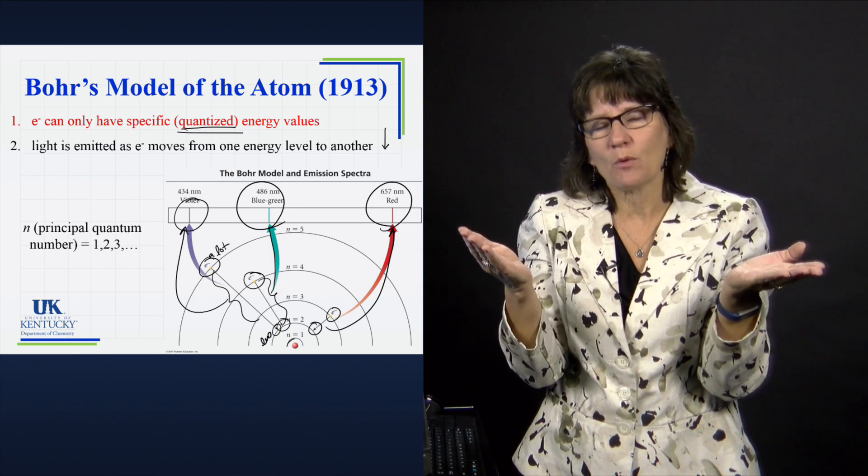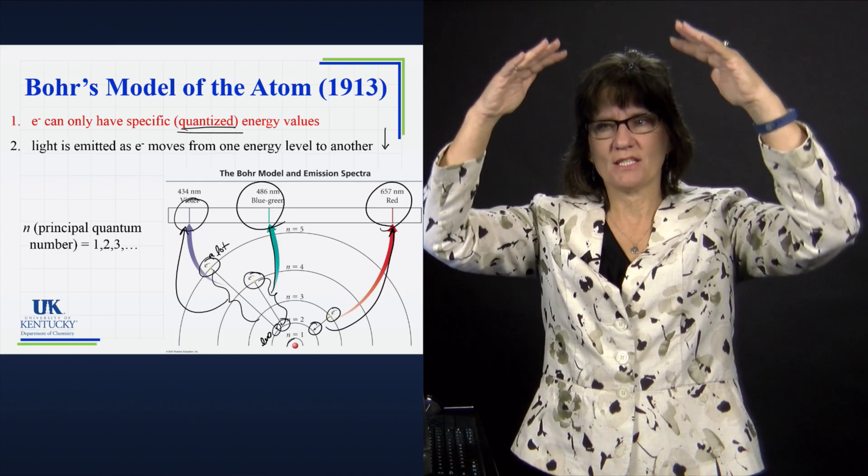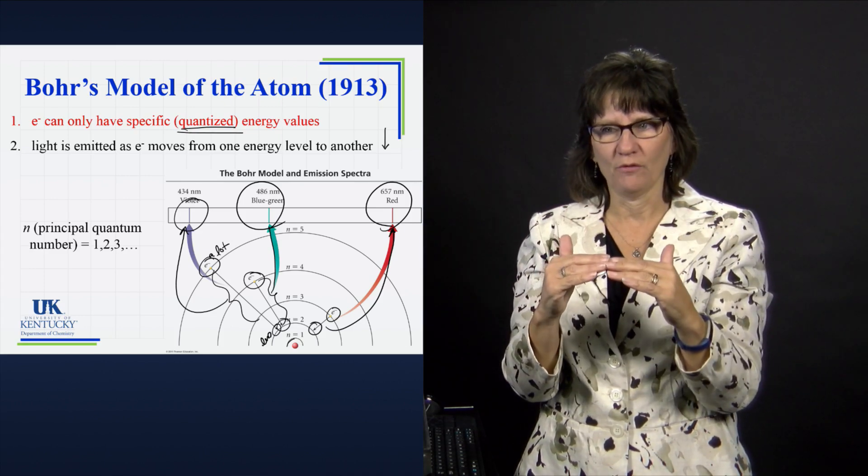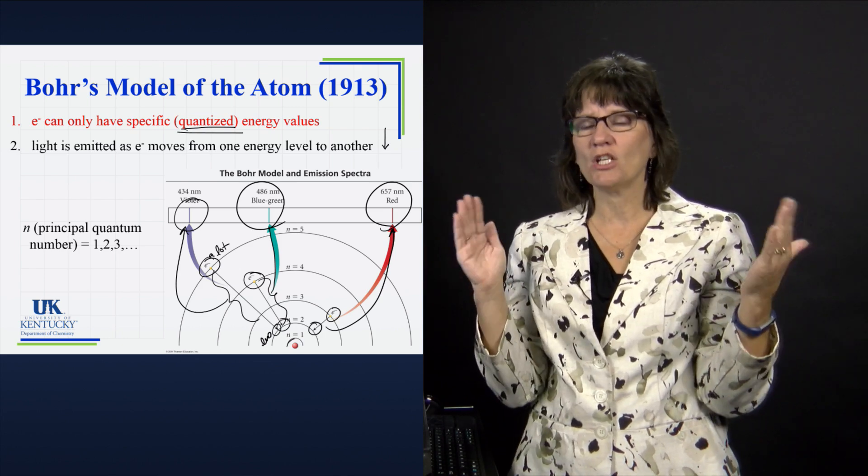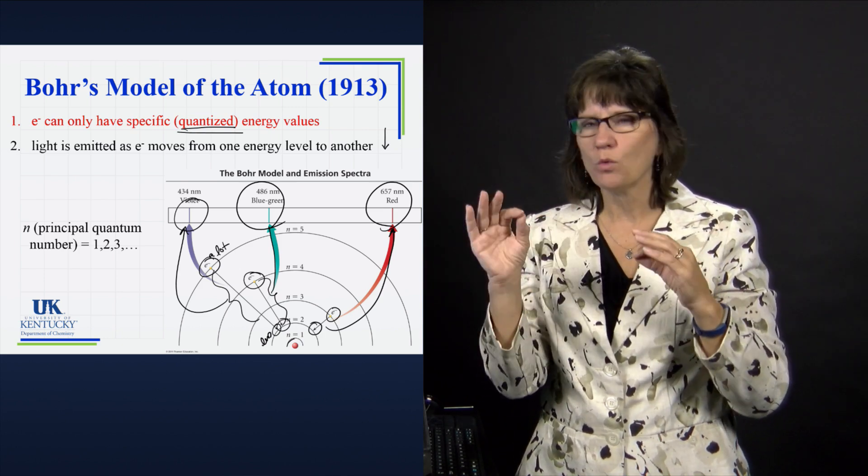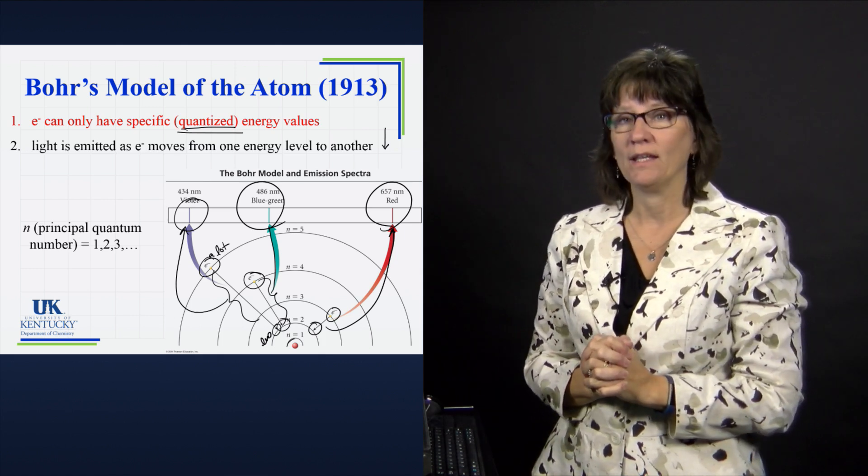It just so happens that with a hydrogen atom, the region that we can see is when an electron goes from a high energy state down to the n equal 2 level. But every possible movement of an electron from a high energy level to a lower energy level, each one of those would have a different photon's frequency that can be emitted when it's given off.